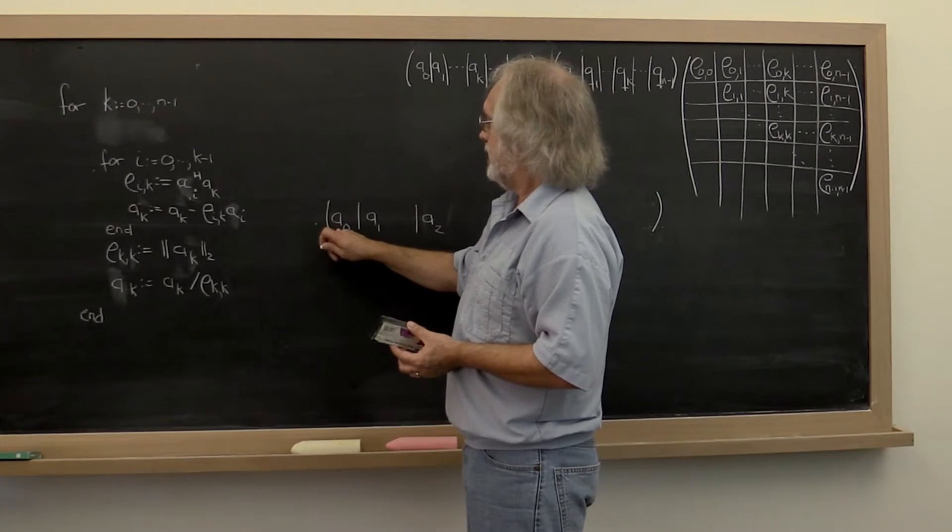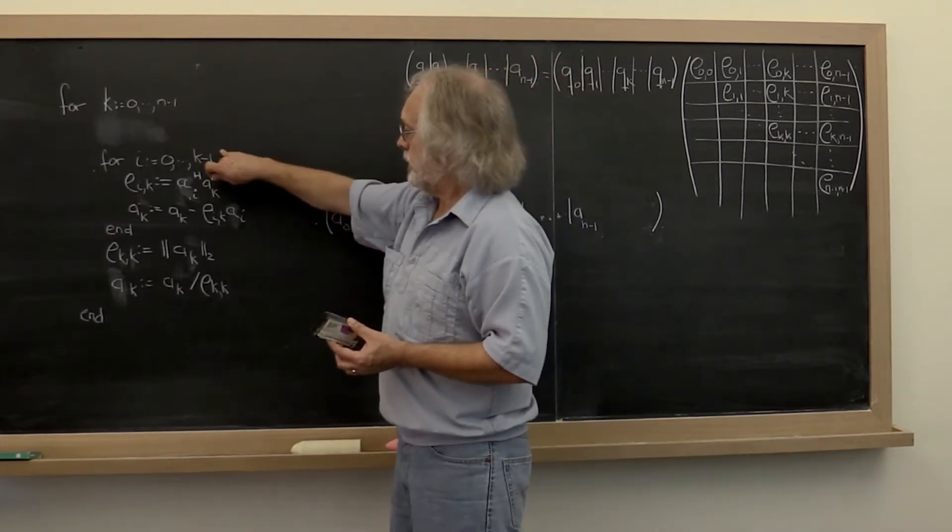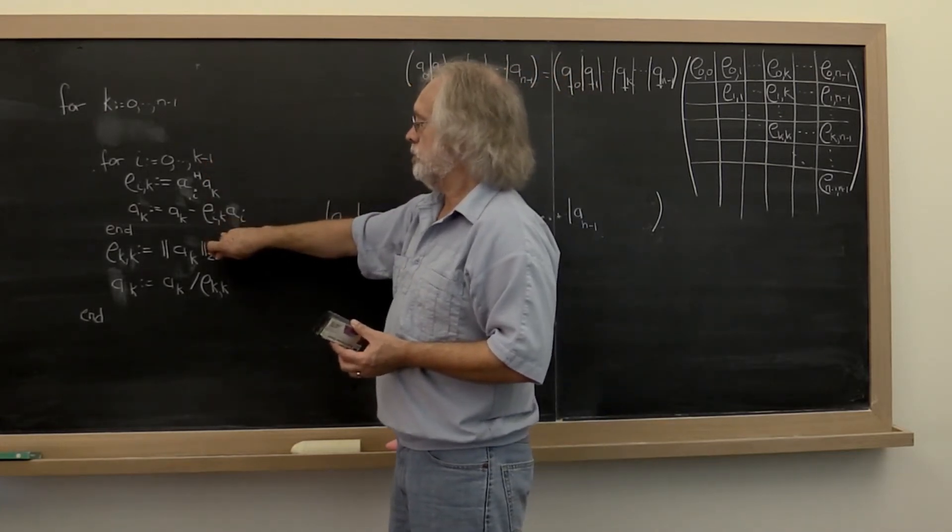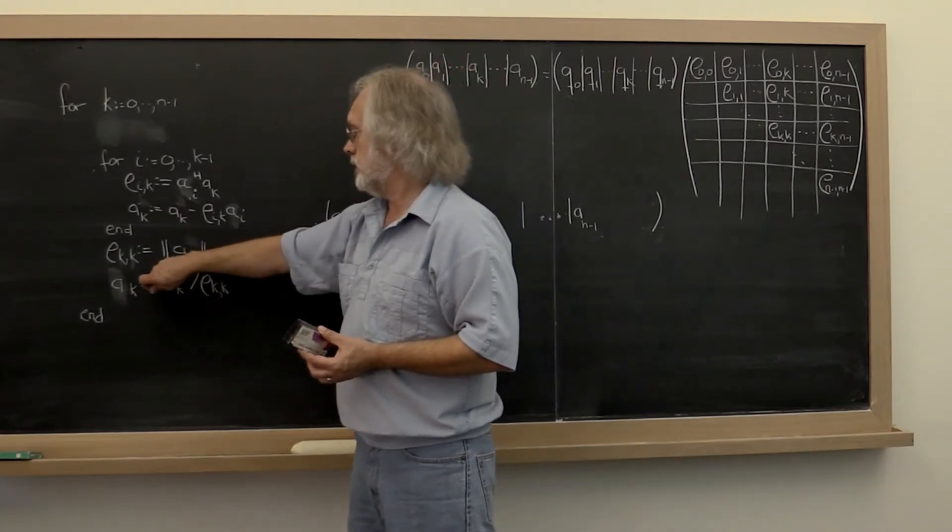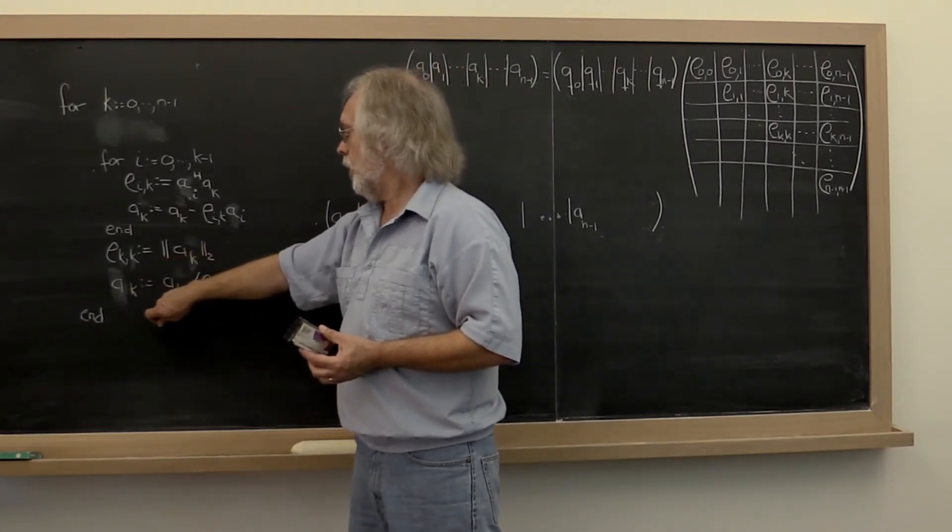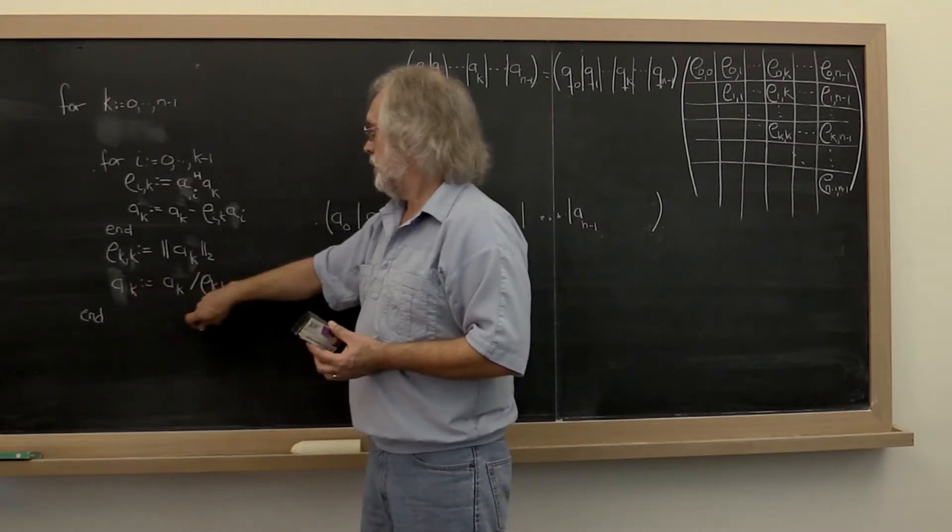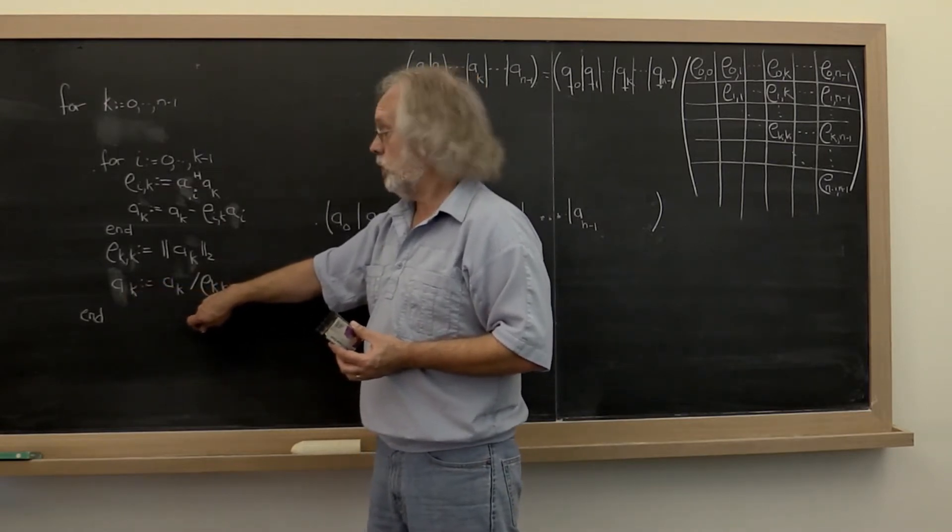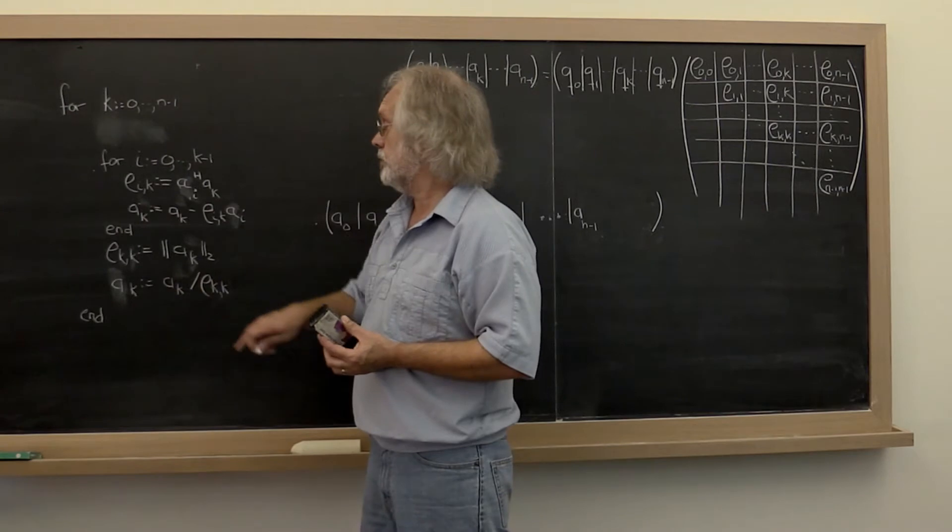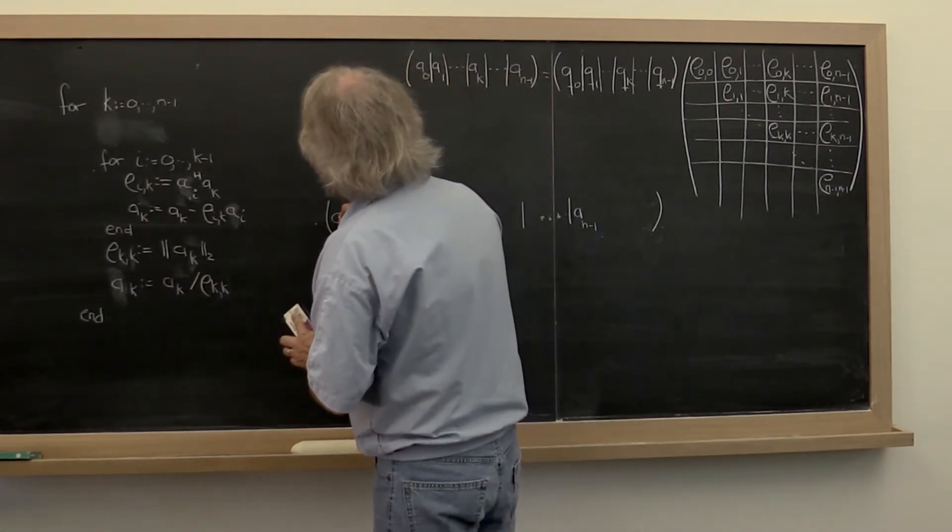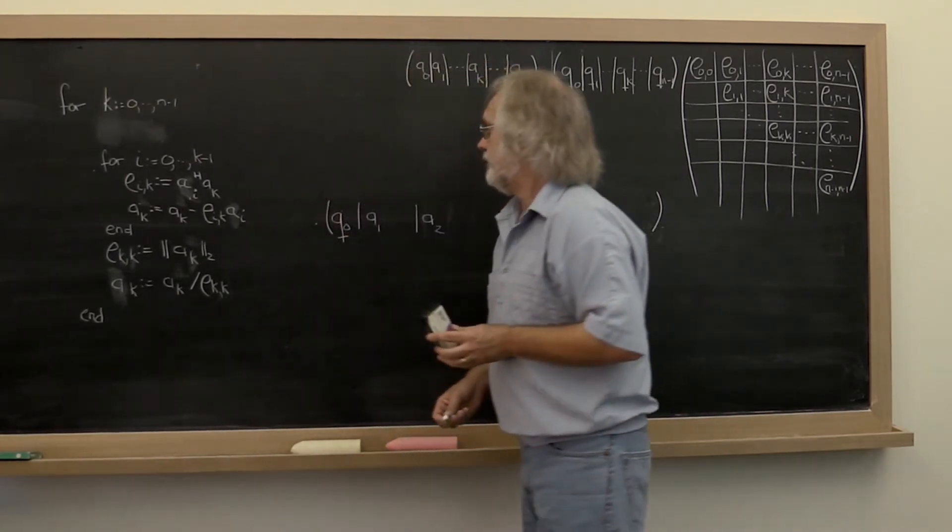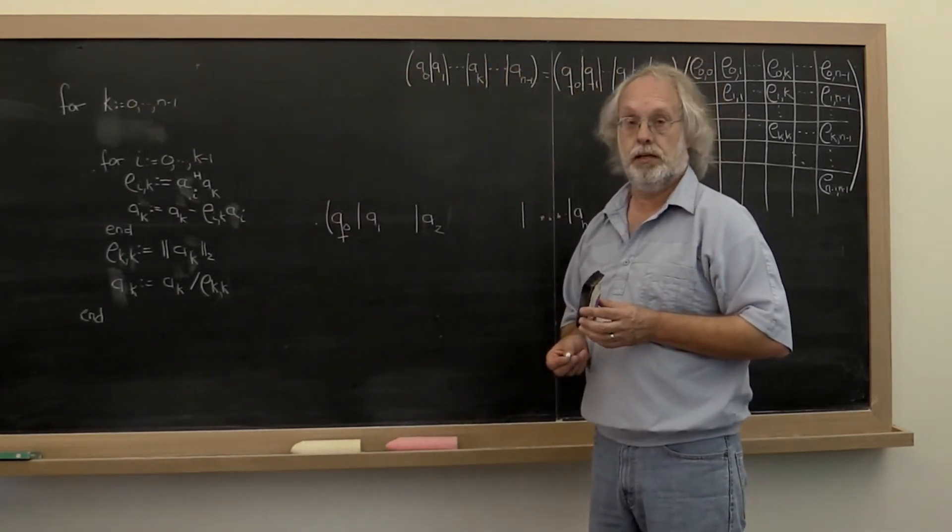And for that vector what we really do is we don't execute this particular loop at all. We go directly to the computation of its length and then we can overwrite a_k with the vector, sorry, a_0 with the vector q_0. So really what happens is at the end of the first iteration we have q_0 sitting right here.